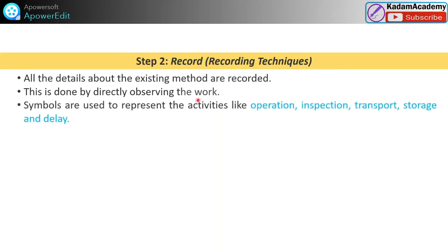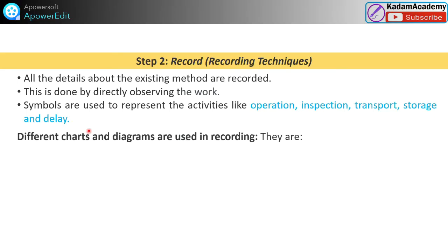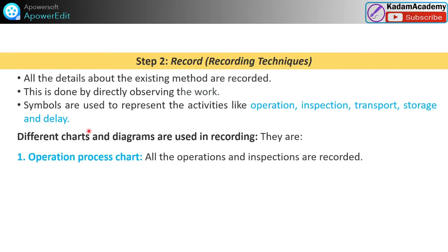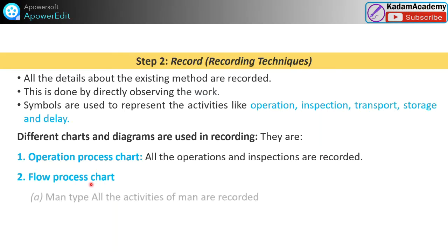You can watch the next video on recording techniques. Similarly, diagrams include the Flow Diagram, String Diagram, and third is the Cycle Graph and Chrono Cycle Graph. Each chart and diagram has importance for a specific purpose in recording techniques of method study. All existing methods are recorded by directly observing the work, and a few symbols are defined for various activities like operations, inspection, transport, storage, and delays — for representing these on charts.